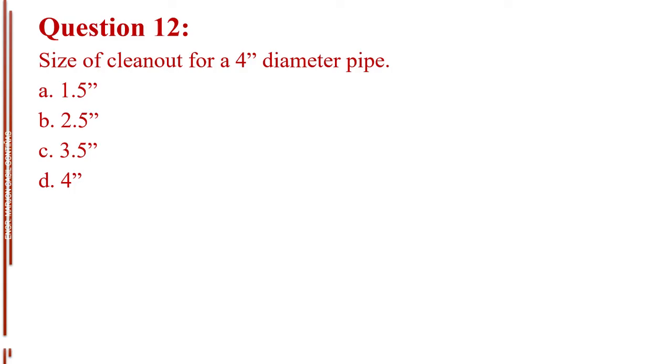Question number 12. Size of clean out for a 4 inch diameter pipe. Letter A, 1.5 inches. Letter B, 2.5 inches. Letter C, 3.5 inches. Letter D, 4 inches. The answer is Letter C, 3.5 inches.